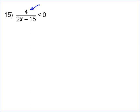there is a problem with the denominator, and that is when 2x minus 15 equals zero. Well, that happens when 2x equals 15 or x equals 7.5.